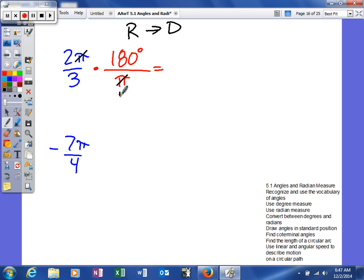So we'll set up our conversion factor to look like this. As you can see, the pi's cancel, 3 will go on itself once, so we'll go on to 180, 60 times, so we get 120 degrees.